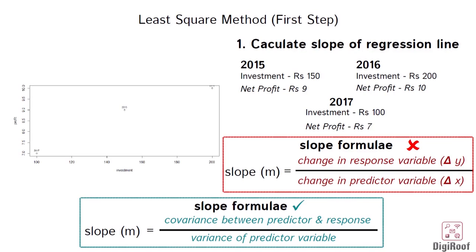The first step of least square method involves calculation of slope of the regression line. The problem is that we don't know any corresponding value of investment and profit that are on the regression line. We only have this data of investment and profit that make these three points and we don't know if any of these three points are on the regression line or not.